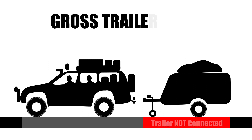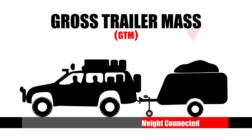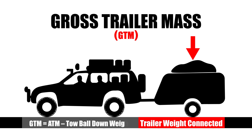Gross trailer mass, or GTM, is the weight of a trailer or similar when it is coupled to a tow vehicle. This can also be explained as: gross trailer mass equals aggregate trailer mass minus tow ball down weight.